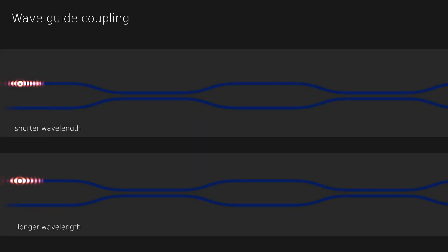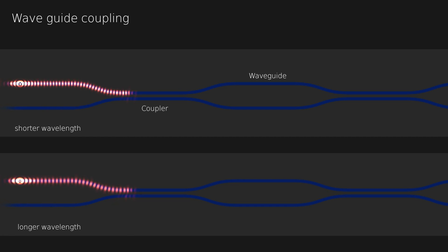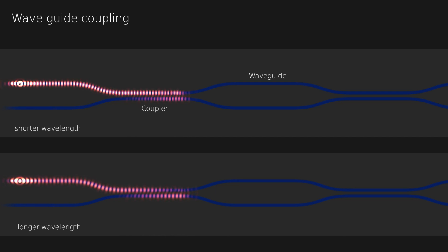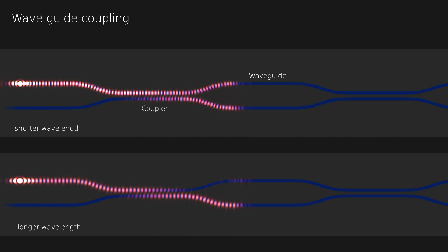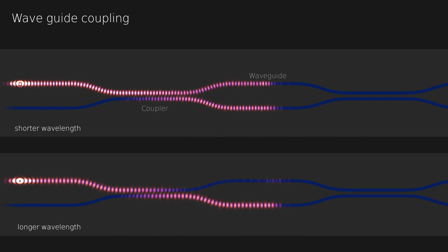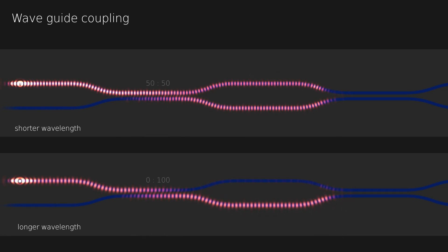The basic building blocks of these chips are waveguides, phase shifters, and couplers. Here you see two waveguides in blue which are coupled at two places by running close to each other. The evanescent field transfers energy to the other waveguide in the coupling region. The length of this region and the wavelength of the light define the coupling strength.